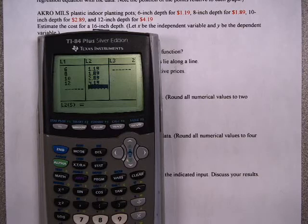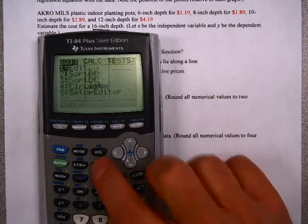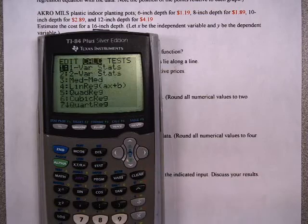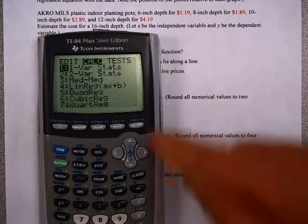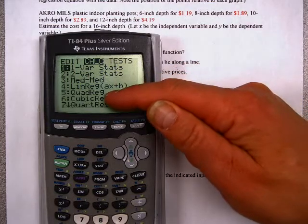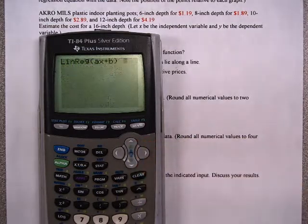To find the equation is pretty simple. Hit that Stat key again, but this time use one right-hand arrow to go over to Calc. You'll notice number 4, LinReg, AX plus B, and number 5, QuadReg. I want you to hit LinReg.